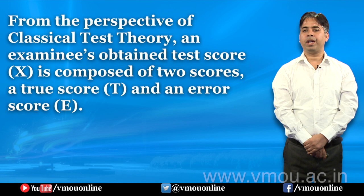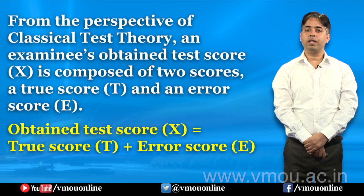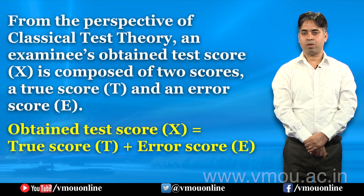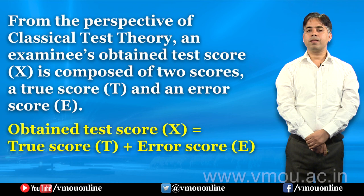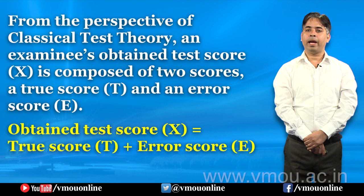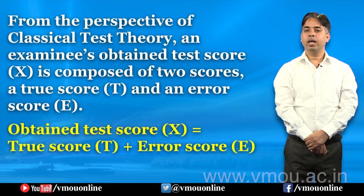From the perspective of Classical Test Theory, an examinee's obtained test score — जिसे हम X से indicate कर सकते हैं — is composed of two scores: a true score and an error score, जिसे हम E से कहते हैं। Classical Test Theory यह बात कहती है कि किसी भी examinee का obtained test score दो प्रकार के scores से composed होता है — पहला true score, जिसे सत्य प्रापतांक कहते हैं, और दूसरा error score।